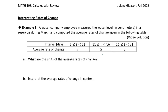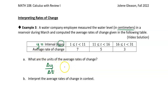First, what are the units of these average rates of change given in the table? It doesn't say, but we can infer from the data that the water level was measured in centimeters and the time intervals are measured in days. So since t is in days and water level is in centimeters — let's call this y — then delta y over delta t, which is our rate of change, is going to be in centimeters per day.